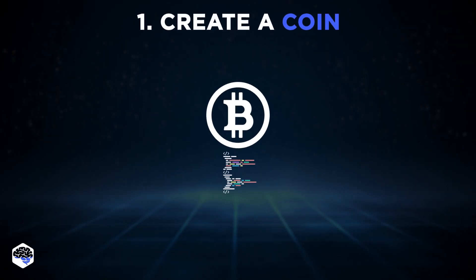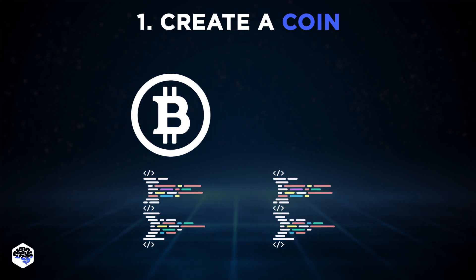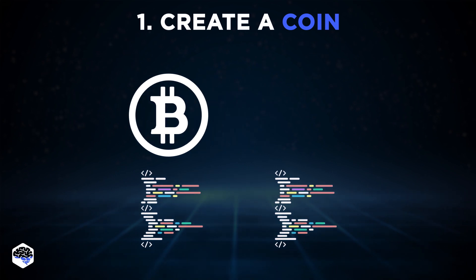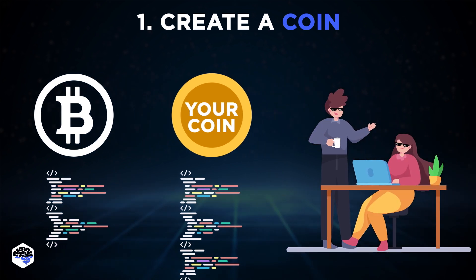Now it's time to overview two main ways to create a cryptocurrency. The first way is to create a coin. Coin creation can take as little as five minutes — you can simply copy the Bitcoin code, add a new variable or change the value of something, and you have your blockchain and a coin.